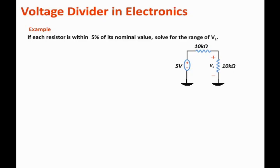If each resistor is within 5 percent tolerance of its nominal value, solve for the range of VL. Now this is a practical example because most components have tolerances as we know, so the resistor values here are within 5 percent of their nominal values.